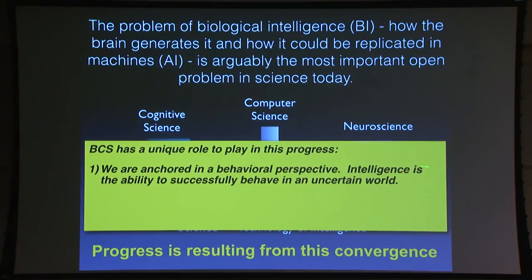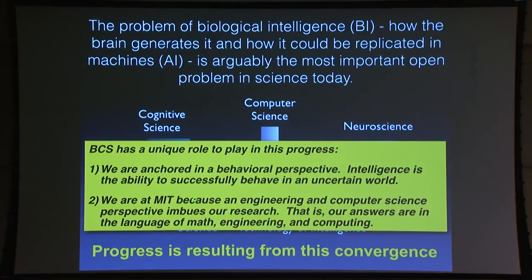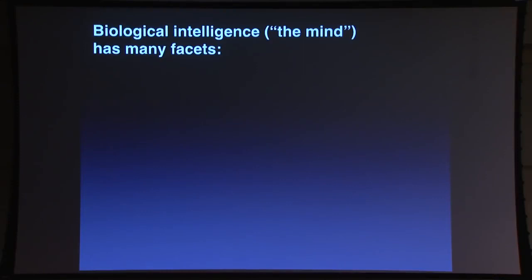Our department has a unique role to play in this progress. We are anchored in a behavioral perspective, and ultimately intelligence is about the ability to successfully behave in the world — not just the mechanisms of the brain, but how they give rise to functionally appropriate behavior. We're at MIT, and we take a particular perspective: we want to build models in engineering and computer science terms. The answers we expect are not just phenomenology, but models that can be built to be predictive.